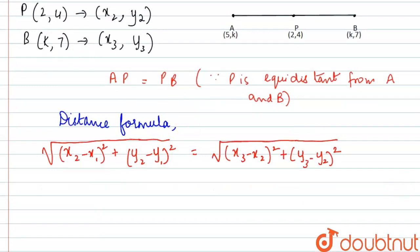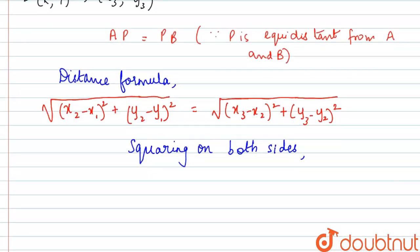Now we'll square on both sides so that the square root gets cancelled. So squaring on both sides, upon squaring the square root goes away. So here now we'll substitute the values and write: (2 - 5)² plus (4 - k)² is equal to (k - 2)² plus (7 - 4)².